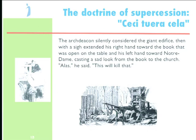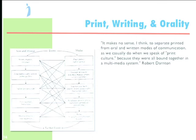This is most famously expressed in Victor Hugo's Notre-Dame de Paris — in English, The Hunchback of Notre Dame. The archdeacon, who is the villain of the piece, is standing in a print room. He looks at the printed book on the table and then stretches his arm toward the cathedral of Notre Dame and says, 'Ceci tuera cela' — 'This will kill that.' Print will kill architecture, or the representation of the stained glass. And that expression — 'this will kill that' — is often used to describe any technology booting out another one. But in a larger sense, in terms of these major modes of communication, that's rarely the case. That's the point Darnton was making: it makes no sense to separate printed from oral and written modes of communication, as we casually do when we speak of print culture, because they were all bound together in a multimedia system.